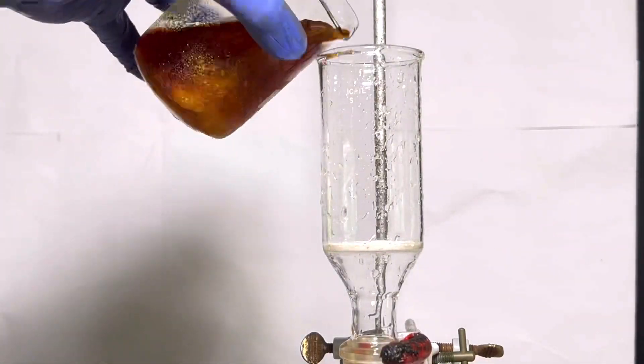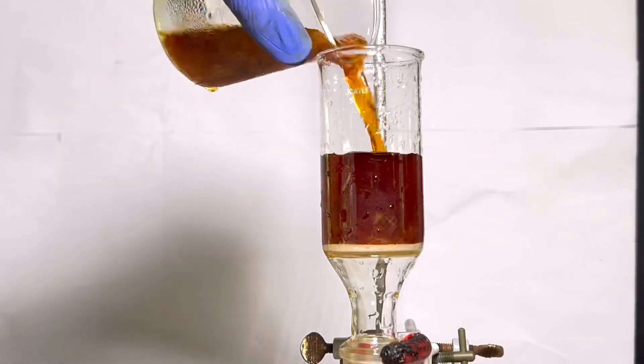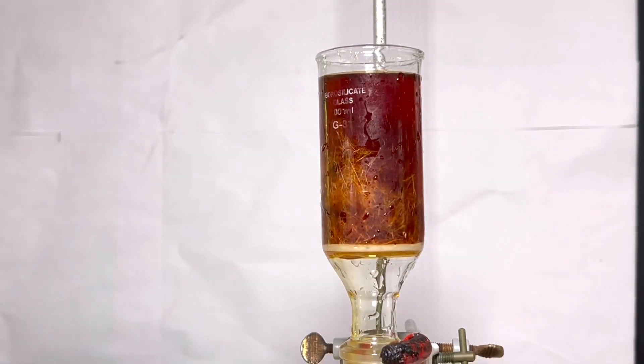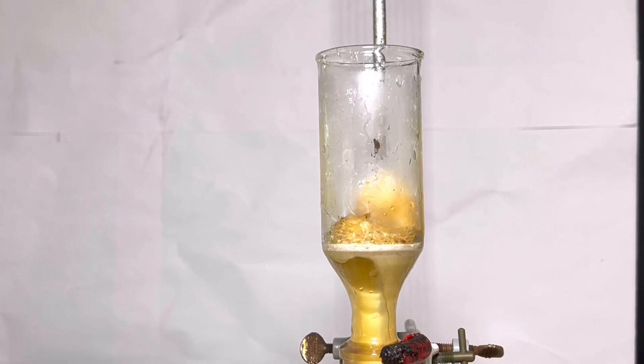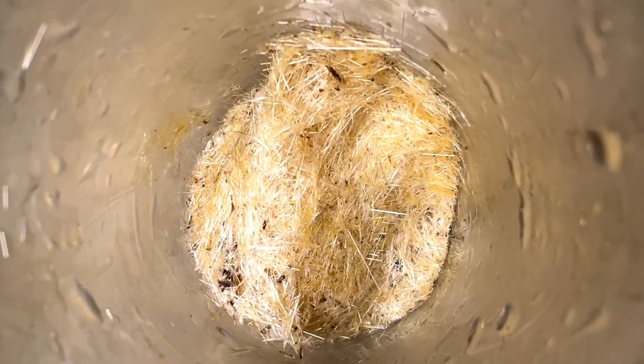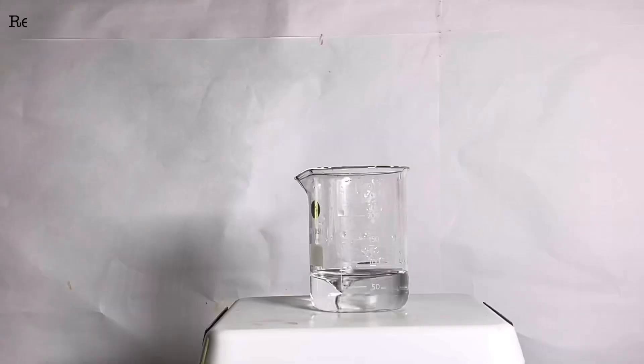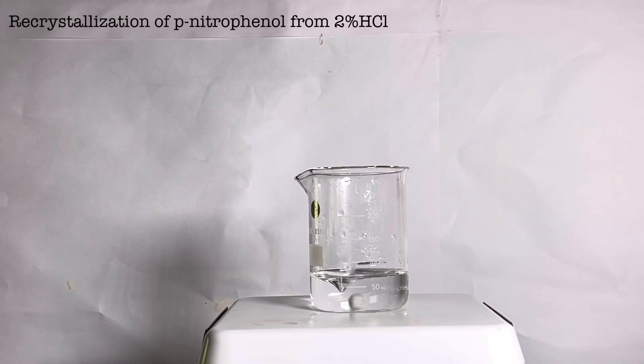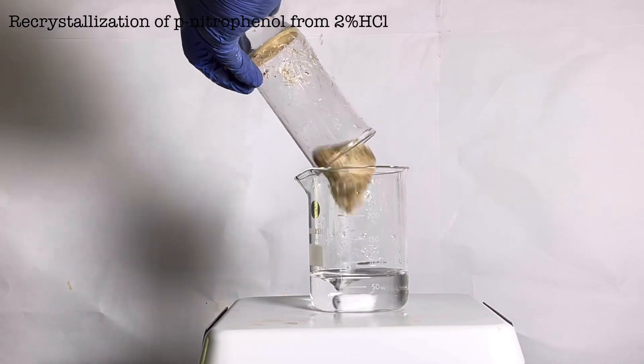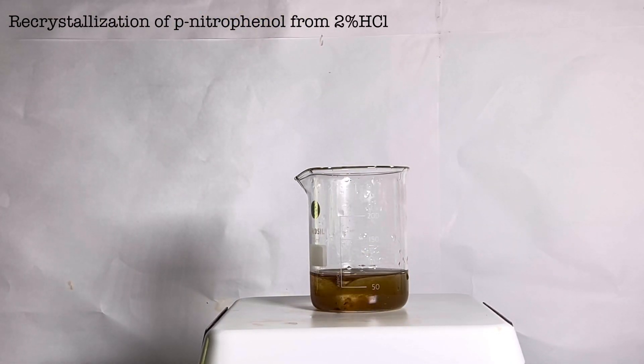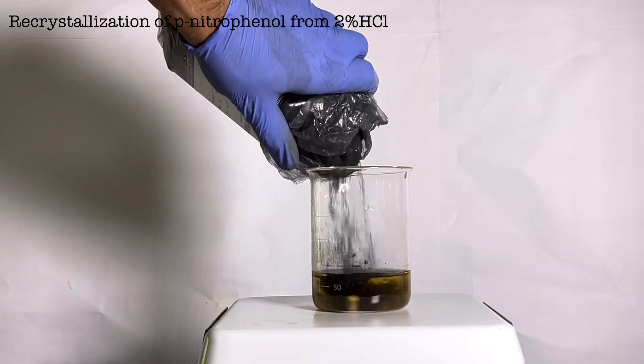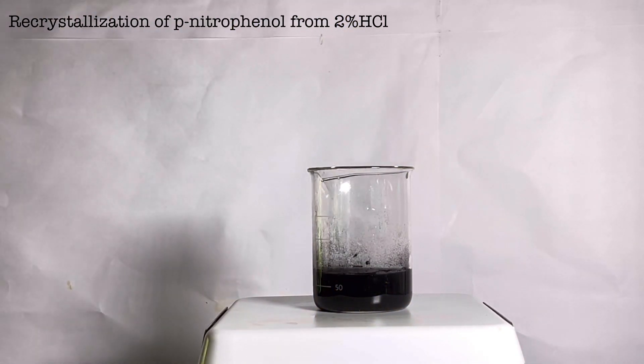Next, I take the para-nitrophenol crystals and transfer them to the Buchner funnel. Filtration was done and the crystals were white, but lots of impurities were present. So I decided to recrystallize it from around 60 ml of 2% hydrochloric acid. The para-nitrophenol dissolves very quickly in hydrochloric acid. Now activated carbon is dumped in it. The solution was boiled for few minutes and then filtered hot to remove the carbon.